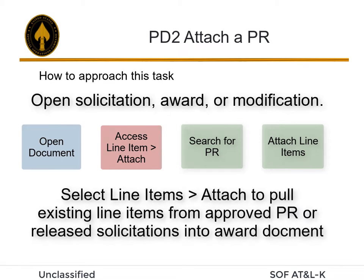By selecting Line Items, then Attach, the user may pull existing line items from approved purchase requests or released solicitations into an award document, or approved PRs into solicitation documents.